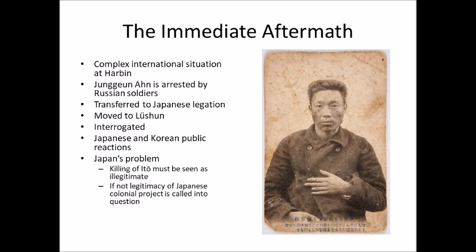If we talk about the immediate aftermath of Ahn's killing of Ito Hirobumi, we have to keep in mind that the international situation at the time was very complex. Ahn killed Ito Hirobumi at Harbin Railway Station, which is located in the region of Manchuria, which was territory that technically belonged to China. At this time, China was very weak — still ruled by the Qing Dynasty, which would be overthrown about two years later when the Chinese Republic was set up.